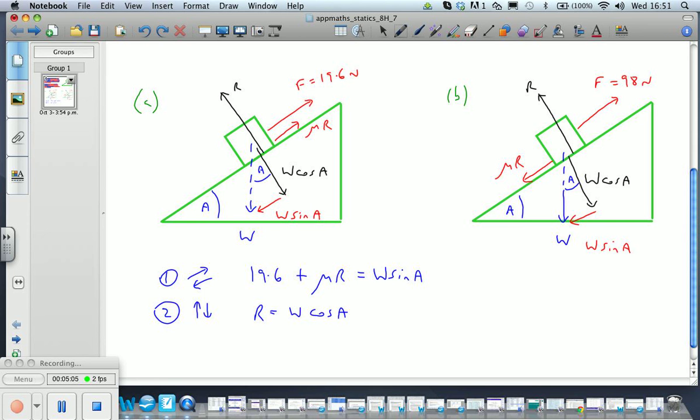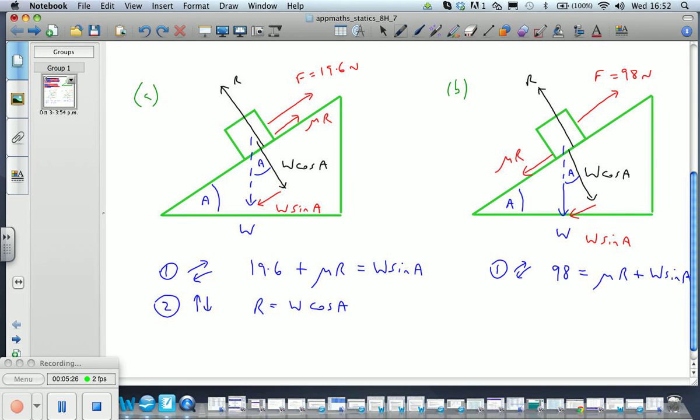In the second situation, we have our parallel forces, which in this case will be 98 newtons. Our F is equal to μR + W sin A. And similarly, we have our perpendicular forces, which is just R = W cos A.